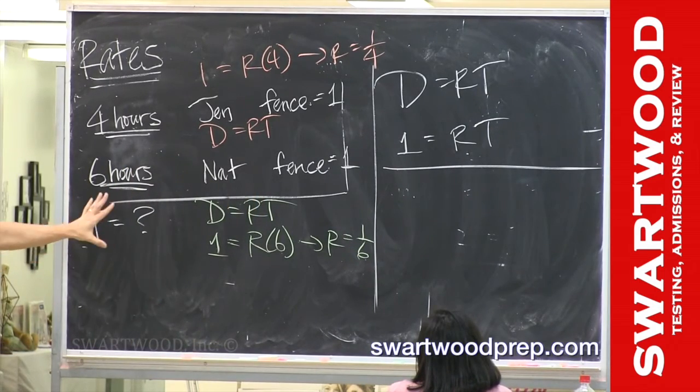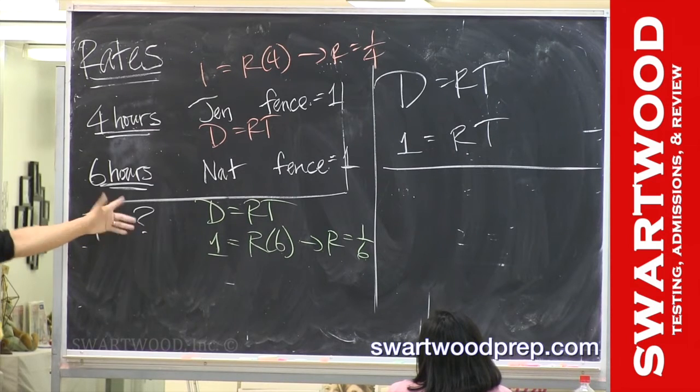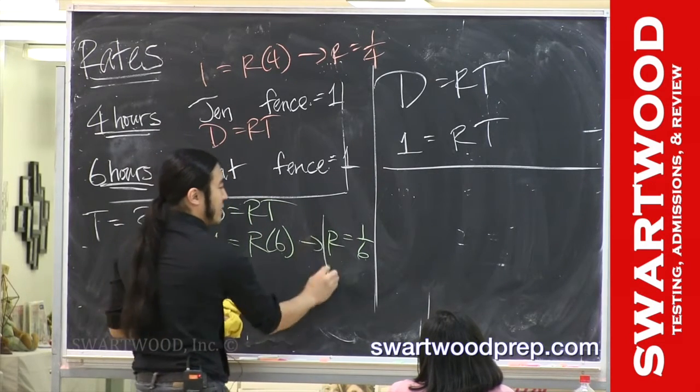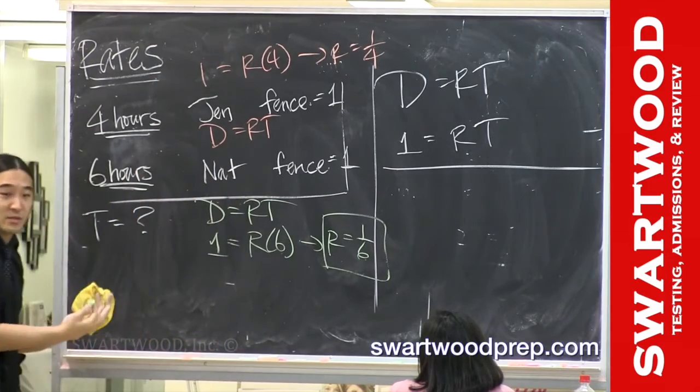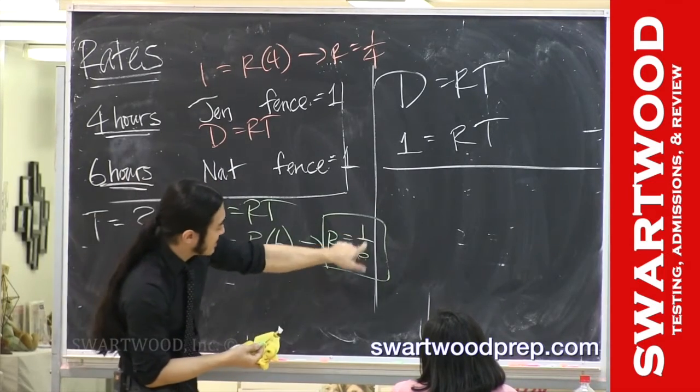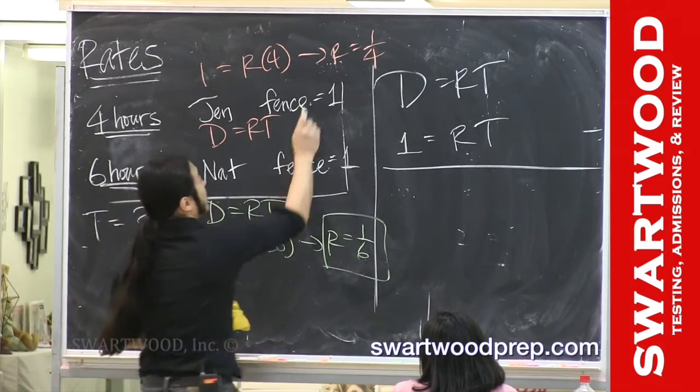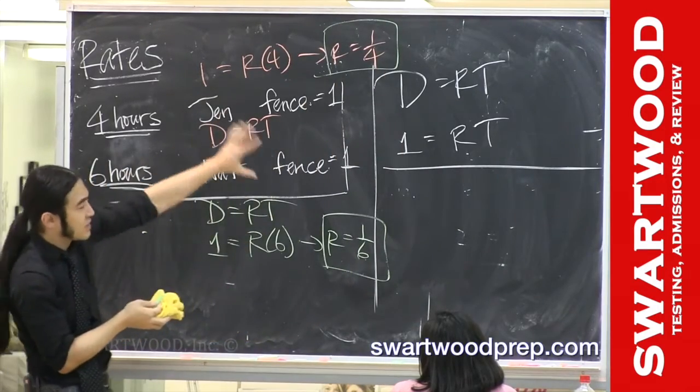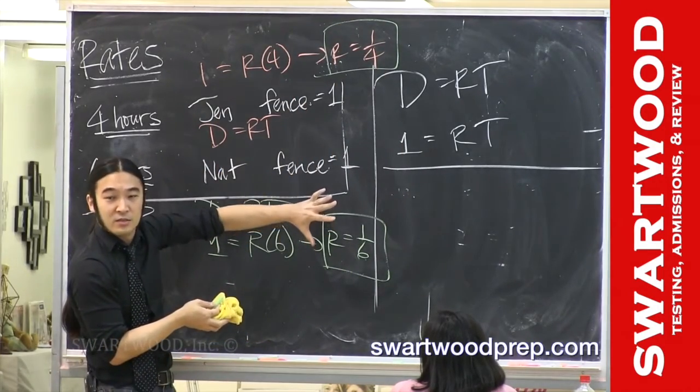Then, kind of like the previous problem, what's the overall rate? Now they're not gonna hurt each other—you don't have to subtract. He's gonna build a sixth of it every hour, she's gonna build a quarter of it every hour. So what do they do together? Just add.